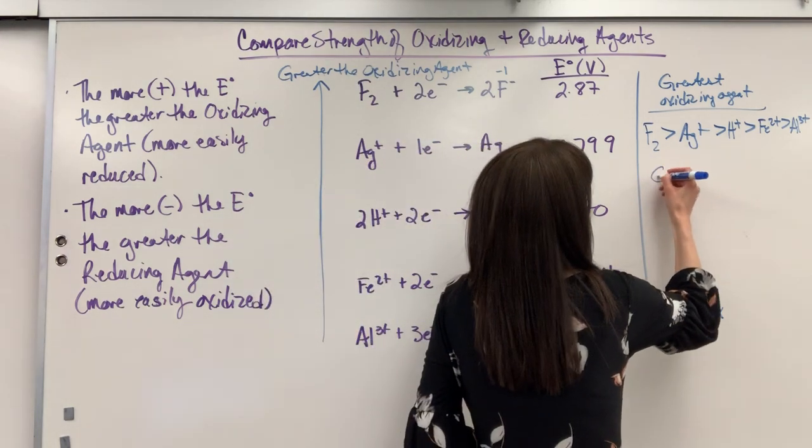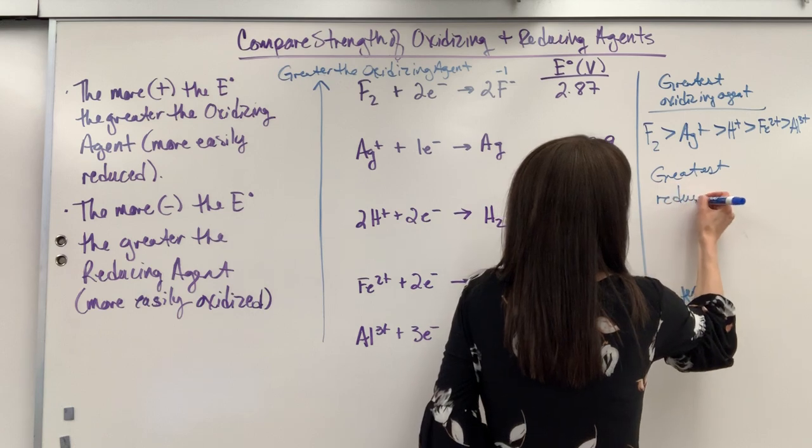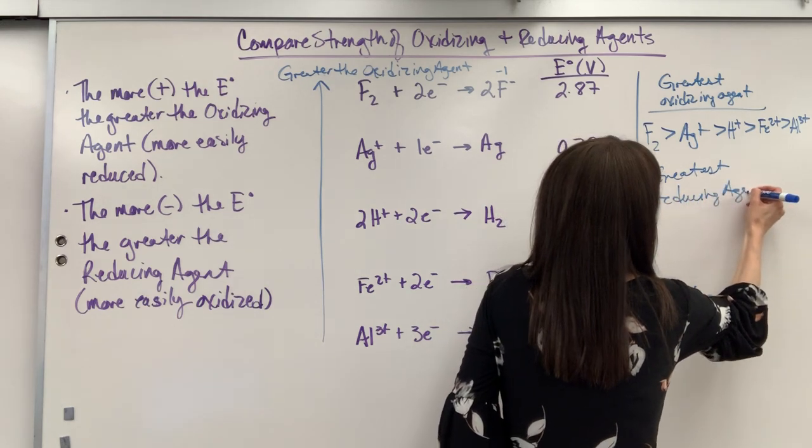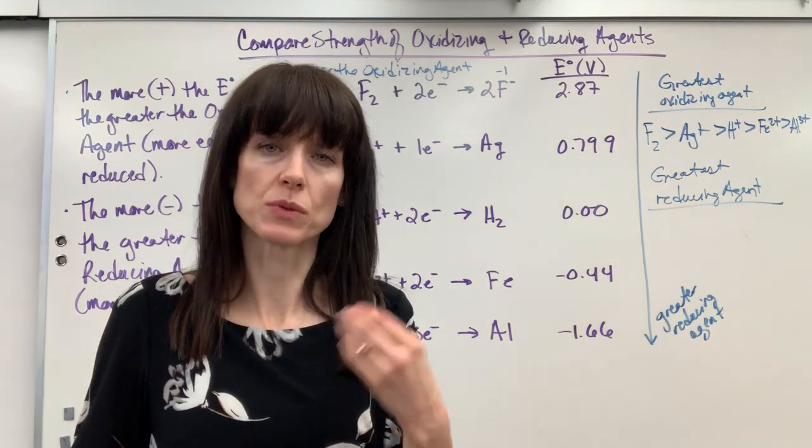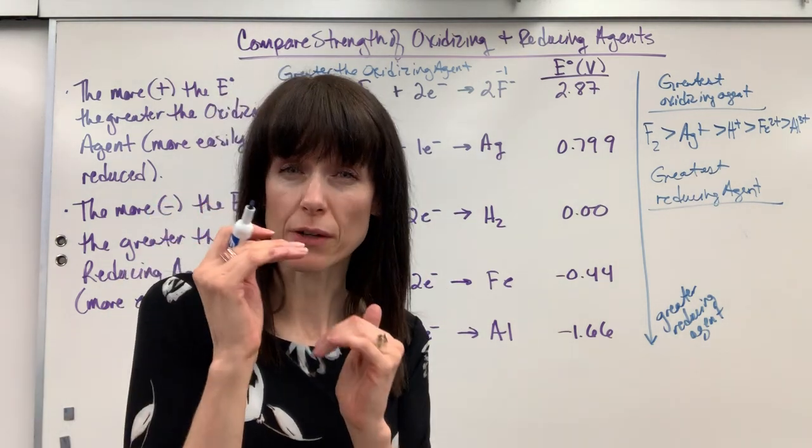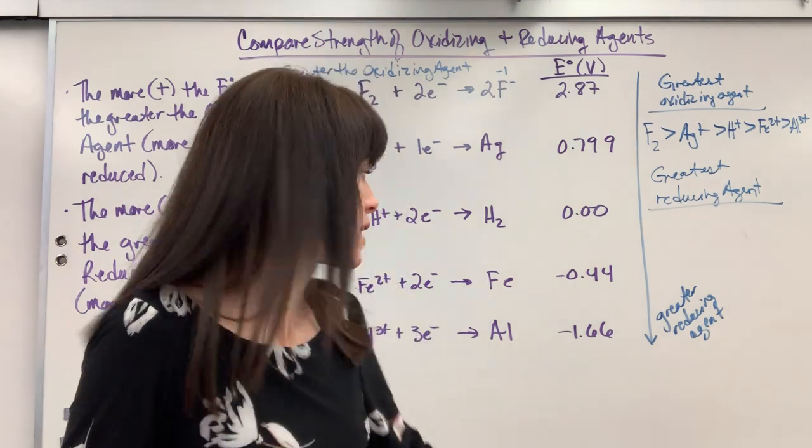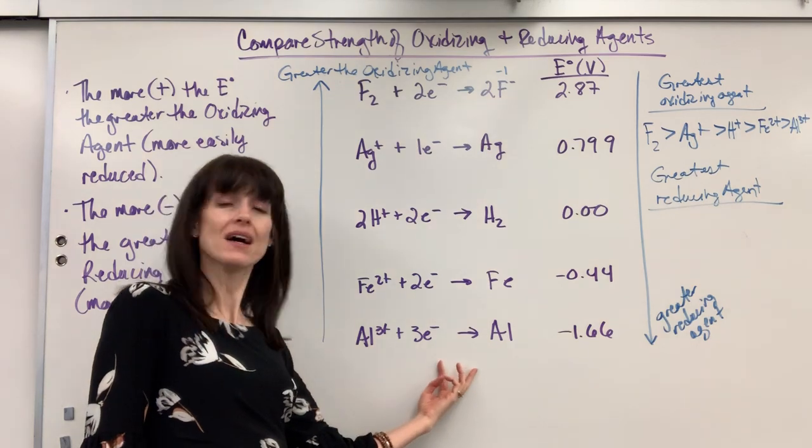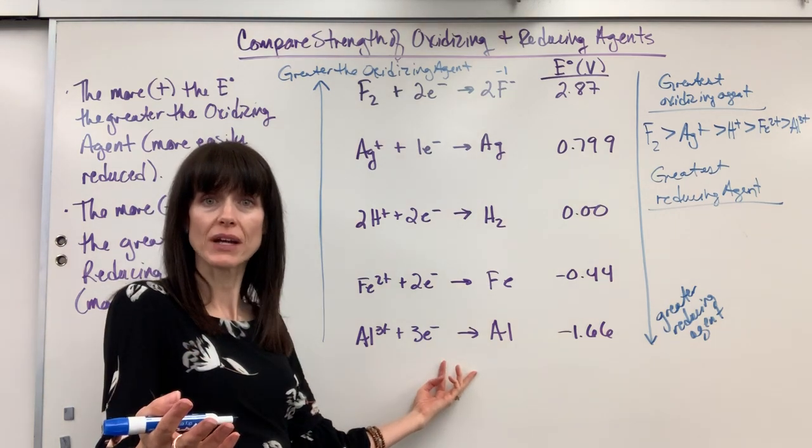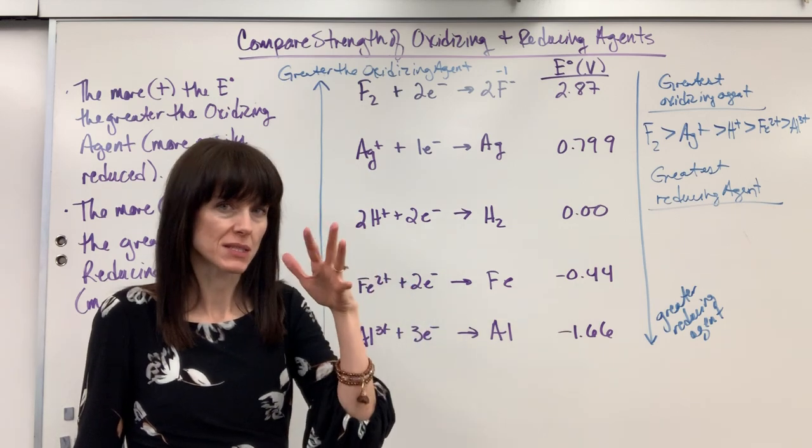So, if I were to do the greatest reducing agent, this is how the steps I walk in my brain. I say, reducing agent is what's oxidized. When I look at a standard reduction potential table, the items that are more easily oxidized are the most negative values. Because I'm going to have to flip that, so it loses electrons. It's oxidized, and that becomes positive. That's how I make this make sense in my head.